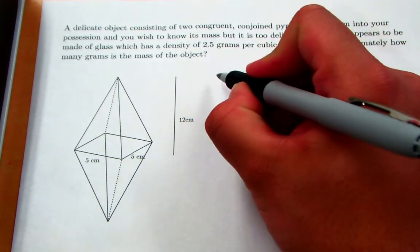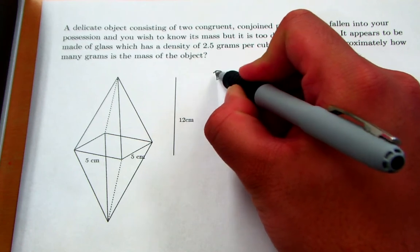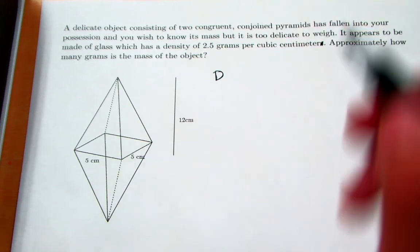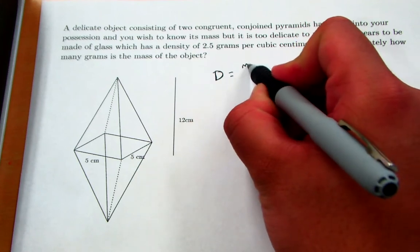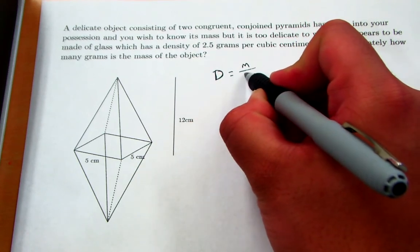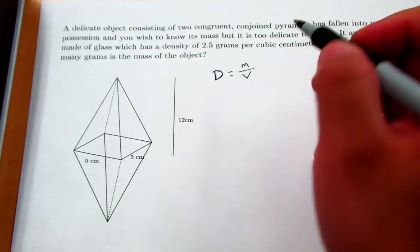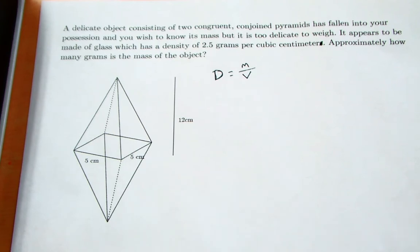Recall that density is a measure of how much stuff fits into a space, a fixed space usually. So formally, density is equal to mass, or the amount of matter, divided by the size of our space, which is usually volume but can also be area. In this problem it will be volume.